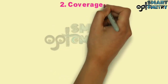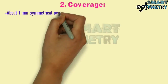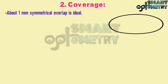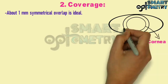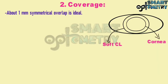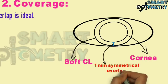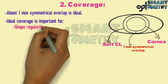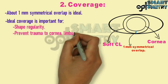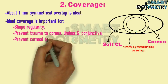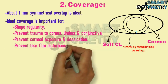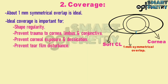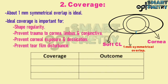2) Coverage: About 1 mm symmetrical limbal overlap is ideal. Ideal coverage is important for shape regularity, preventing trauma to cornea, limbus and conjunctiva, preventing corneal exposure and desiccation, and preventing tear film disturbance. In an optimal fit, coverage will be complete; in a steep fit it will be decentered or poor coverage; in a flat fit it will show incomplete coverage.